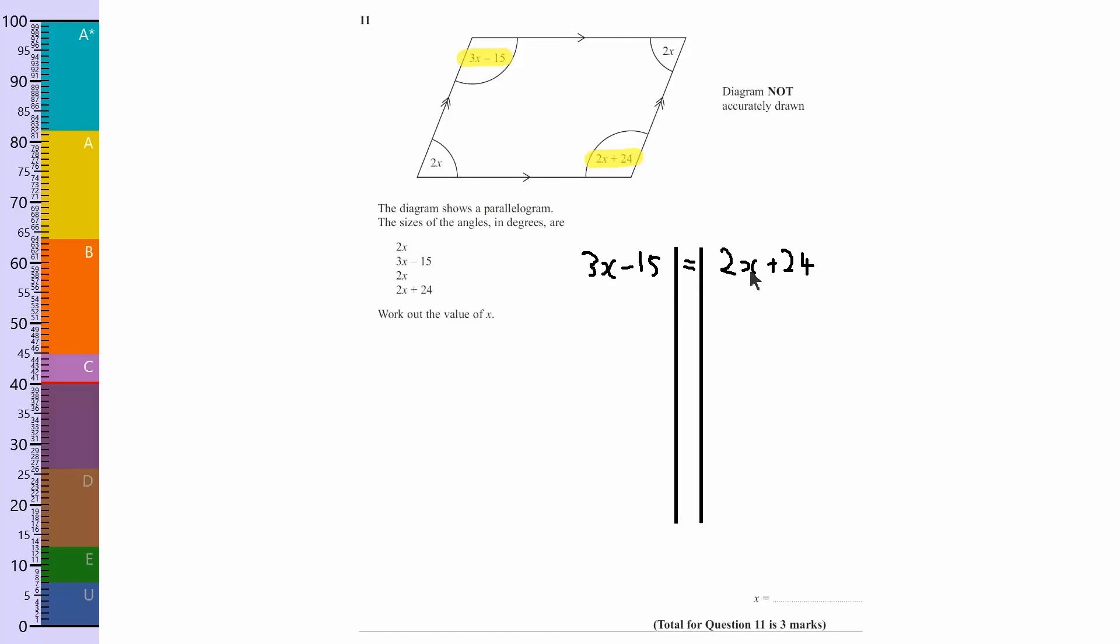That says 2x, so to get rid of it, we're going to take away the 2x. We're going to take away 2x from this side and take away 2x from this side. On this right-hand side, we've got 2x plus 24 and we're taking away the 2x, which just means we're left with 24.